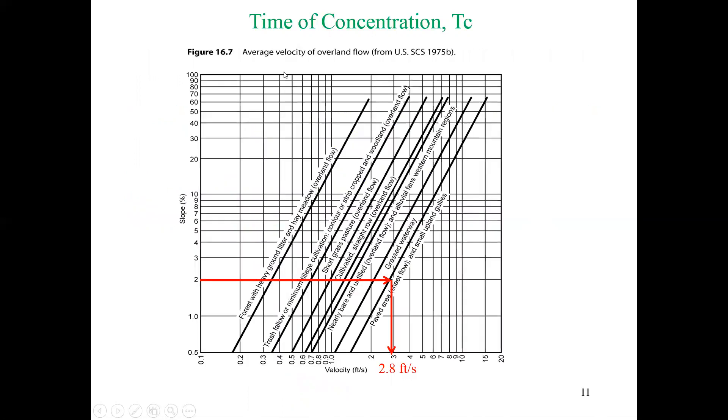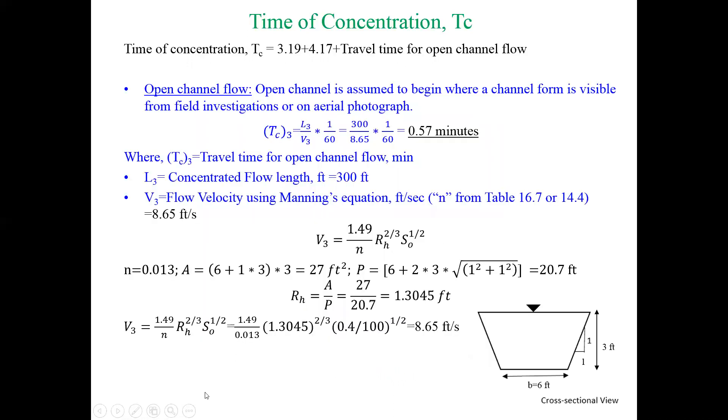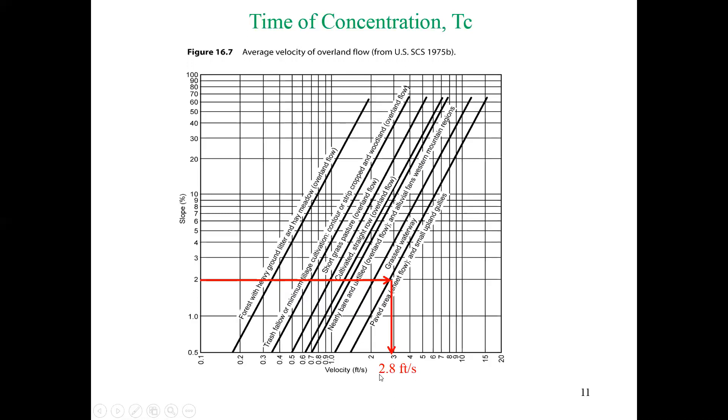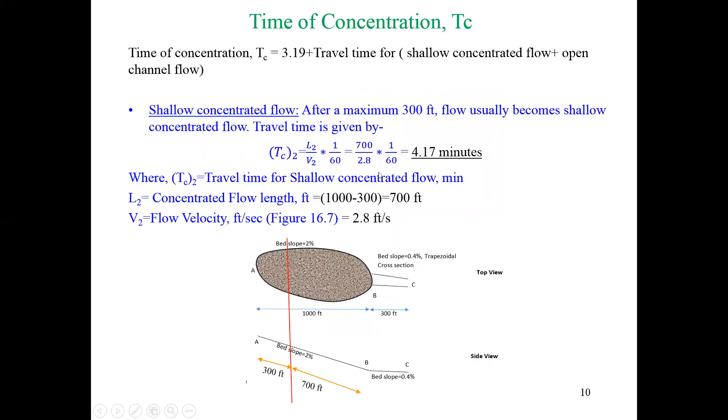Here is Figure 16.7. We know the slope which is 2 percent; we know the surface type which is the paved area. You will just take the value like this way, and based on how you draw that line it will be 2.75 to 2.8—I'm taking 2.8. That is 700 over 2.8 and 1 over 60 just to convert the total time into minutes. We have 4.17 minutes for shallow concentrated flow.